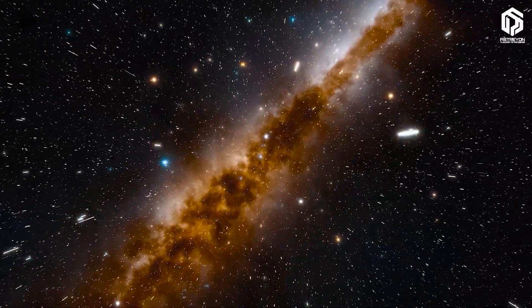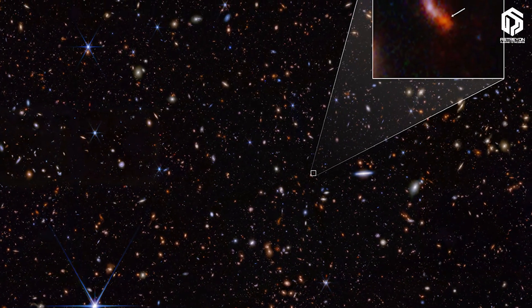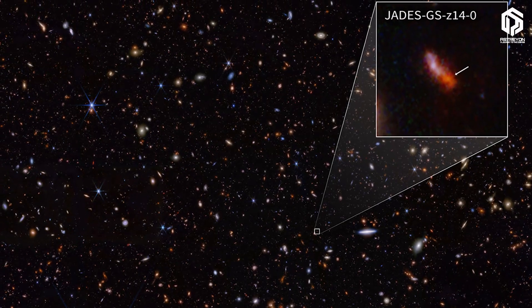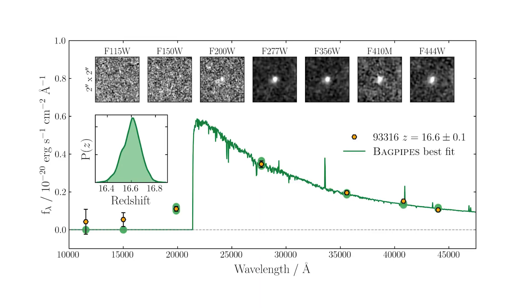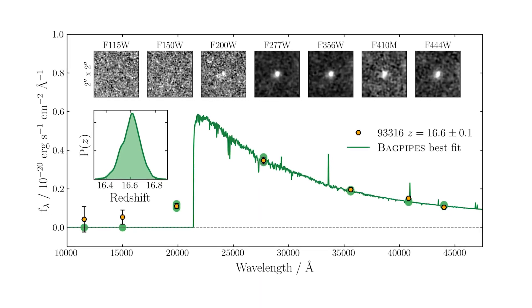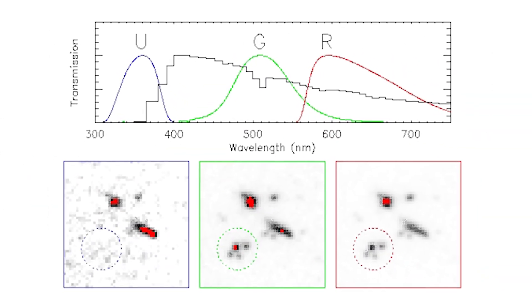The process of discovering these ancient galaxies is a story in itself. Scientists first take multi-filter images, passing light through different filters to isolate specific wavelengths, and look for galaxies that suddenly disappear in shorter wavelengths.